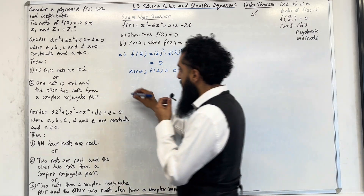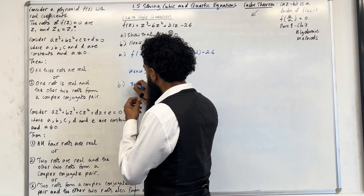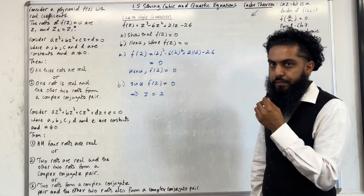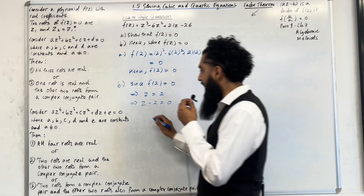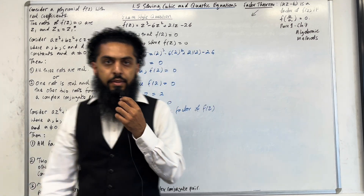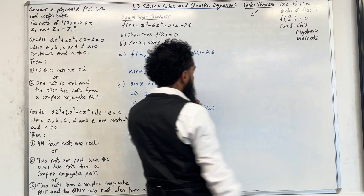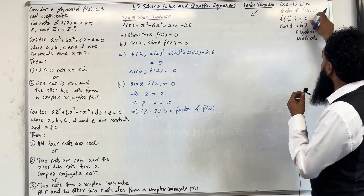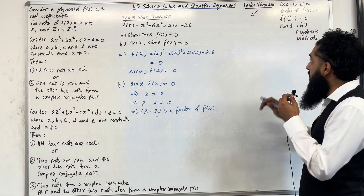Let's move on to part B. It says: hence, solve f(z) = 0. We need to refer back to our answer in part A. Since f(2) = 0, this implies that z = 2 is a root of the function, which in turn implies that z − 2 is a factor of the function using the factor theorem. The factor theorem states: az − b is a factor of f(z) if f(b/a) = 0.